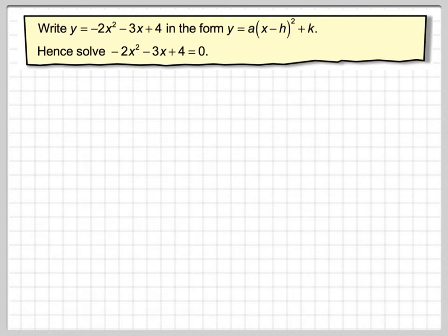So in order to do that let's write that out. So we've got y equals minus 2x squared minus 3x plus 4. You look at the number in front of the x squared and factorize it out of the first two terms only. So factorize out minus 2.